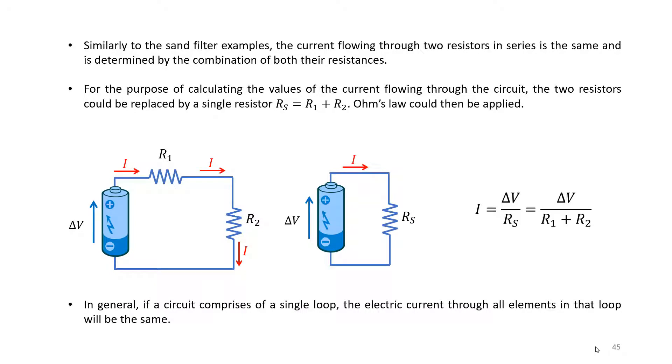Last time we looked at a circuit comprising two resistors in series, connected one after the other, and we saw how in this type of circuit which comprises a single loop, we would have a single current flowing through the loop and hence the same current going through both resistors R1 and R2.